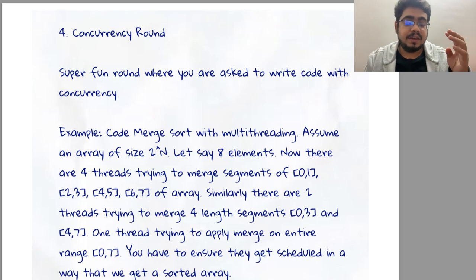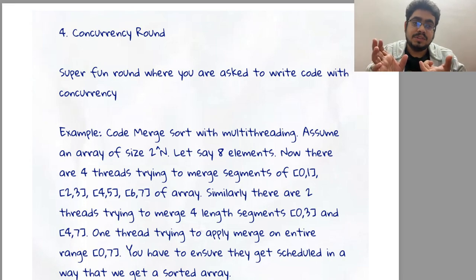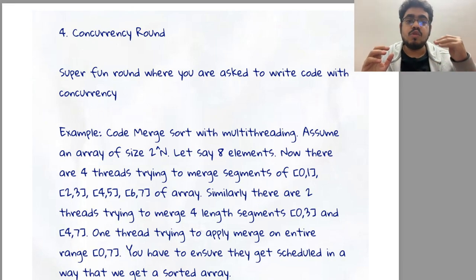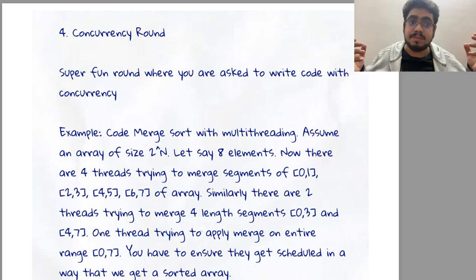Then there are similarly 2 threads which are sorting or merging 4-length sub-arrays, and there is one thread which is merging the entire array. So if there are 4 plus 2 plus 1, that is 7 such threads which are parallelly spawned, how do you make sure that your algorithm actually concludes, that is threads are scheduled in correct order to make sure that you get a sorted array at the end?